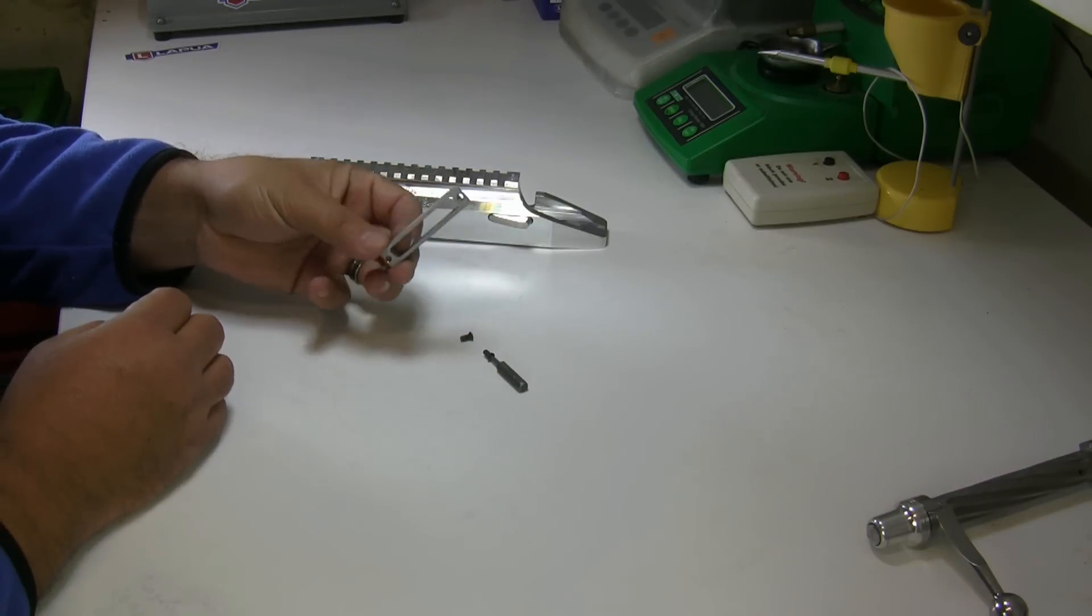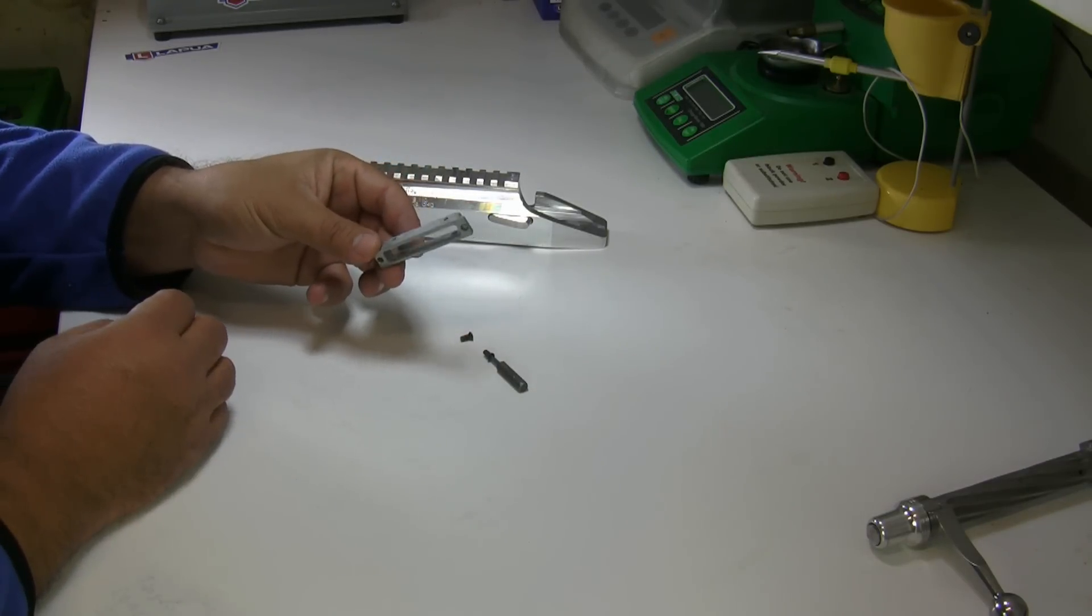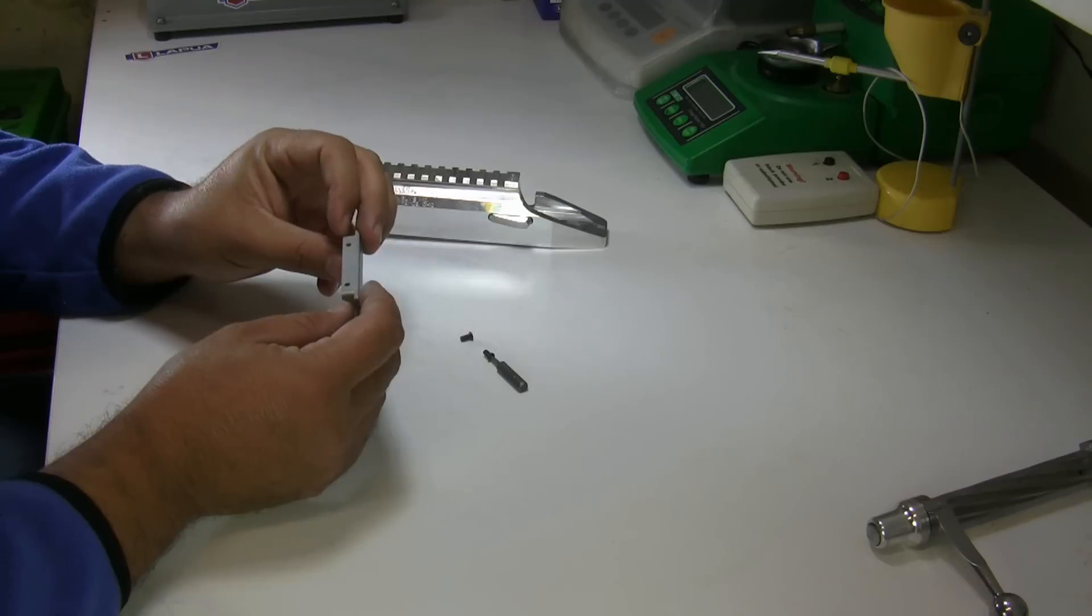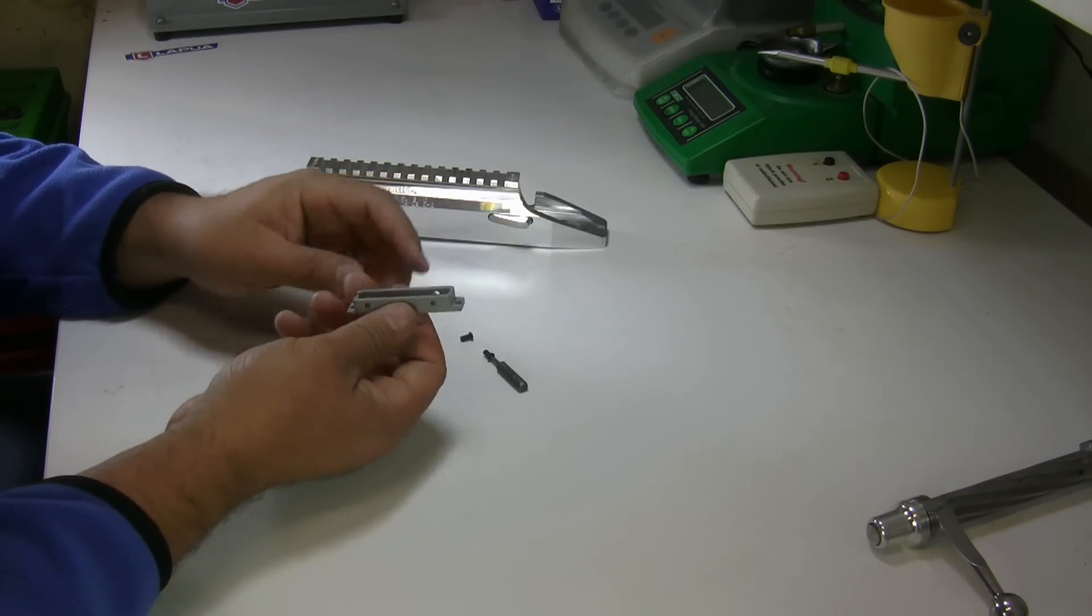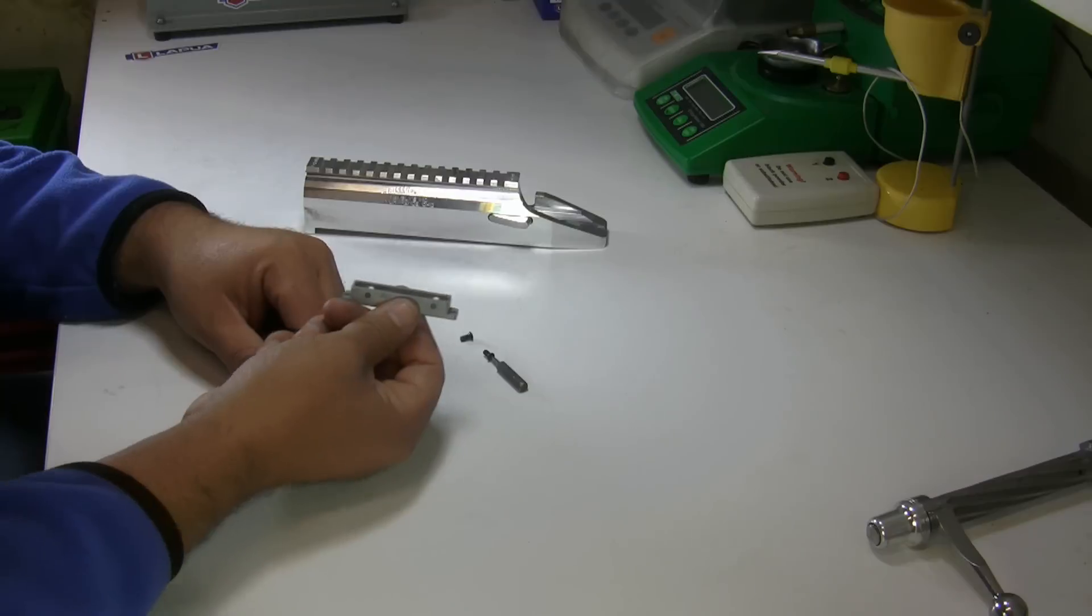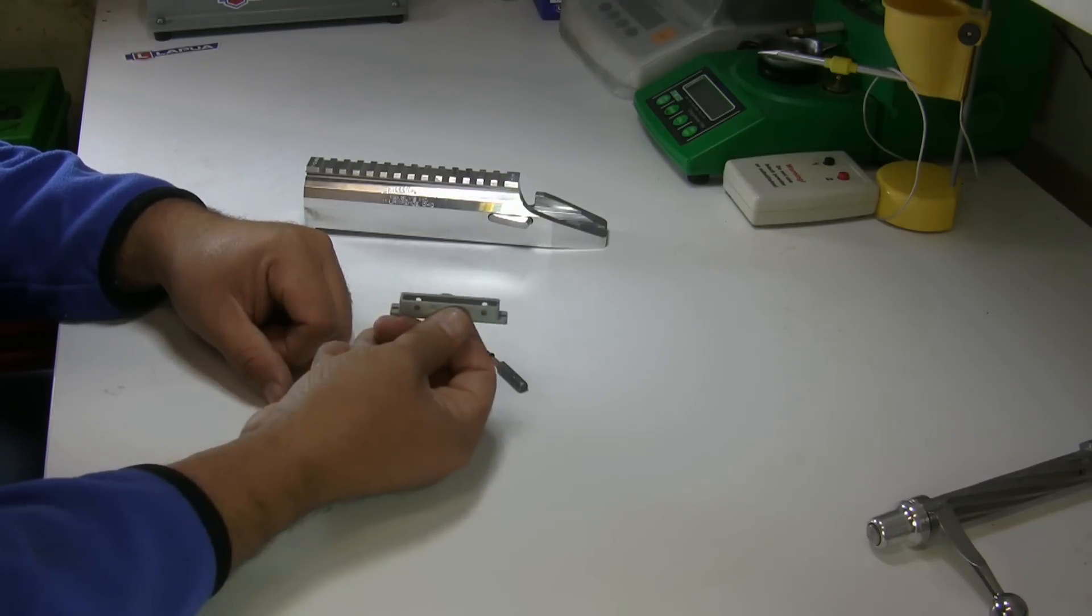This is the trigger hanger. Some of these are offset, so if they are, you need to be careful which way you put them in. This way or that way, because they will actually offset your trigger one way or the other.